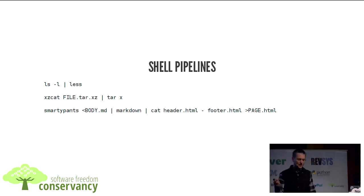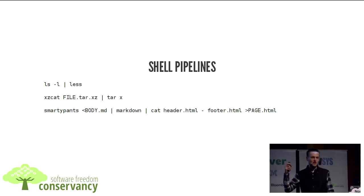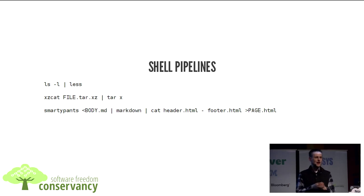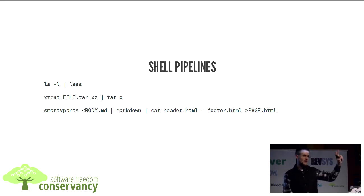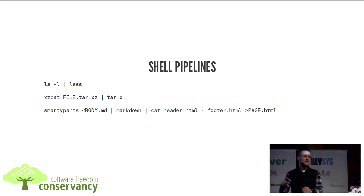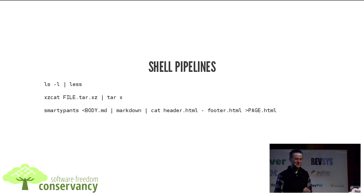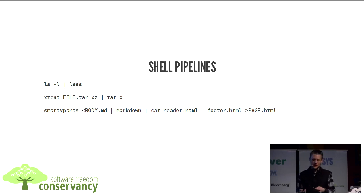We can do more sophisticated things — it doesn't just have to be one command on each end. Here's a personal pipeline I use to publish lightweight web pages. There are command line tools called Smarty Pants and Markdown. Markdown takes a Markdown-formatted input and gives you HTML output. Smarty Pants adds nice formatting like em dashes and proper curly quotes. So one pipeline I've written is to take a Markdown file, pass it through Smarty Pants, then Markdown, giving me a nice chunk of HTML. Then the cat command concatenates an HTML header, that chunk, and an HTML footer into a single HTML page ready for serving.